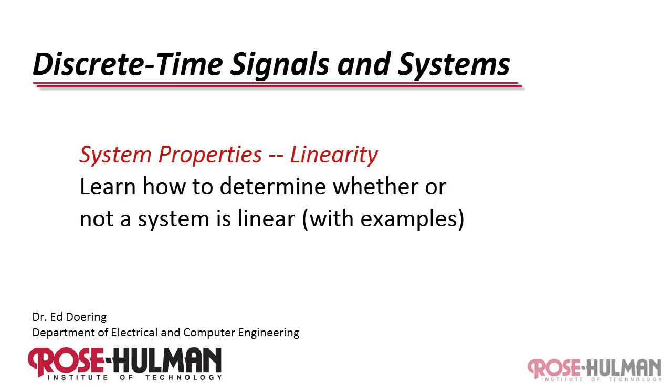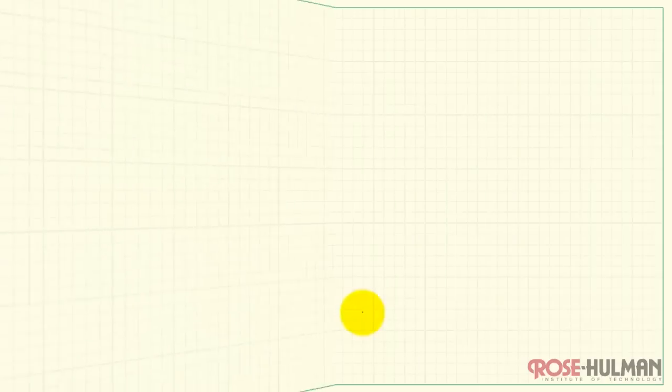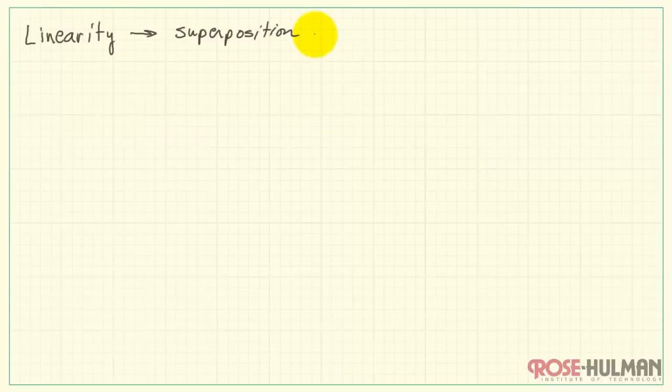Let's take a look at the system property of linearity and especially how to determine whether or not a system is linear. Whenever a system has the linearity property, that means superposition applies. That will be the basis of how we understand whether or not a system is in fact linear.